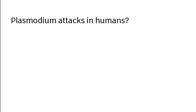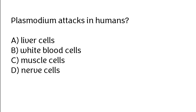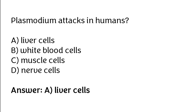Plasmodium attacks in humans: liver cells, white blood cells, muscle cells, nerve cells. The correct answer is option A: Liver cells.